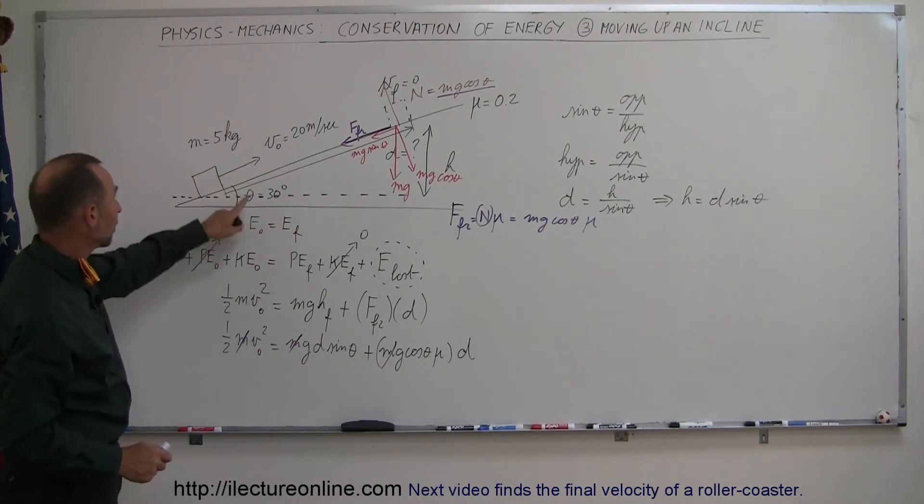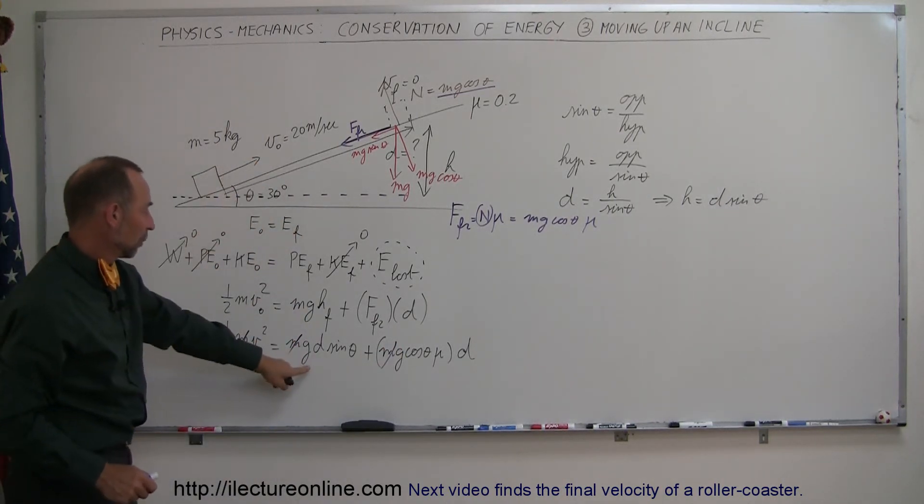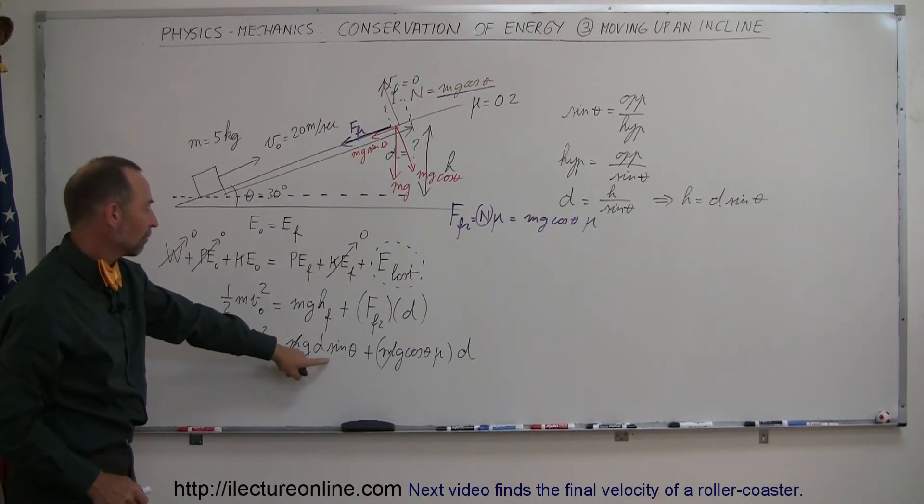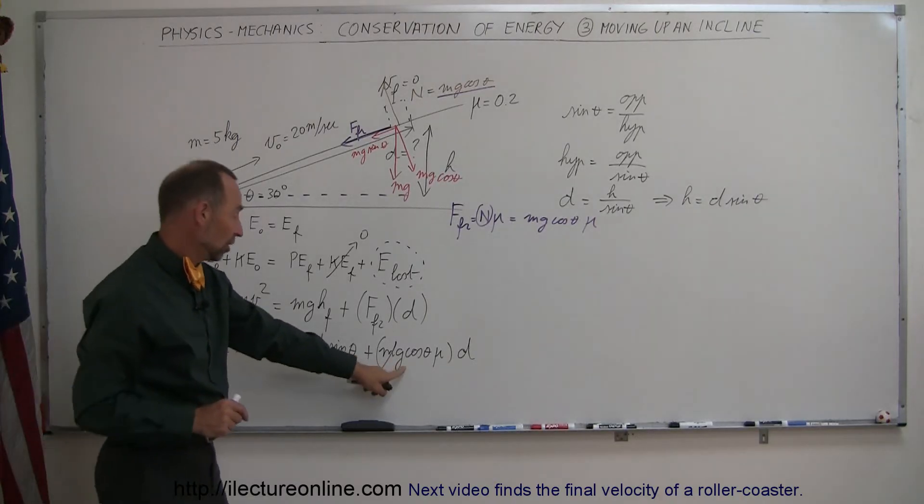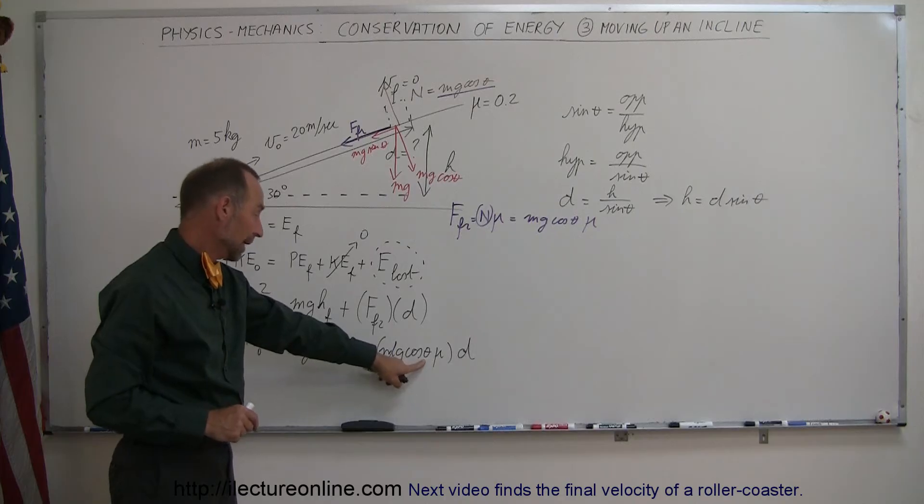Notice we do know the initial velocity. That's given. We know G. D is what we're looking for. We know the angle theta. G is known. We know the angle theta.